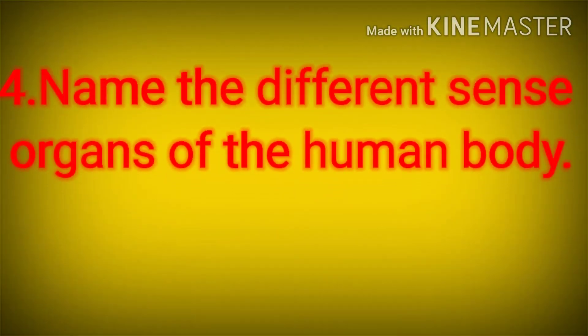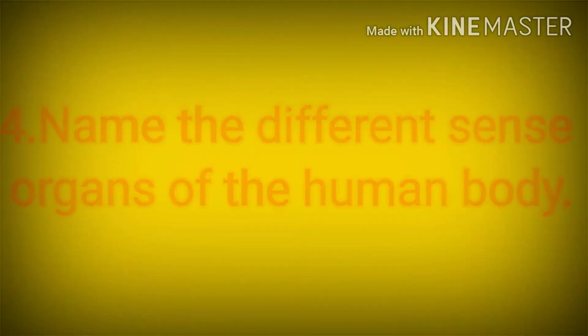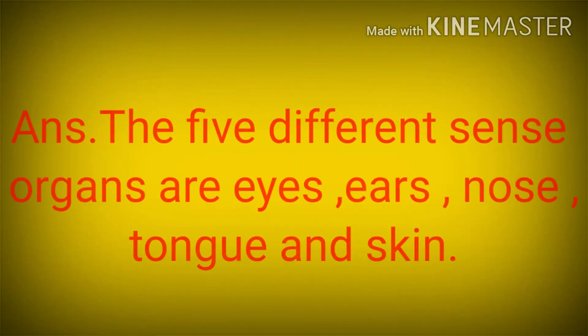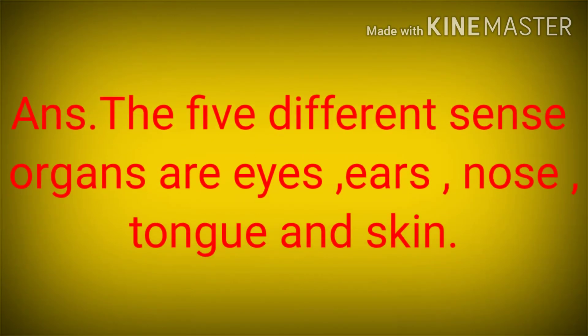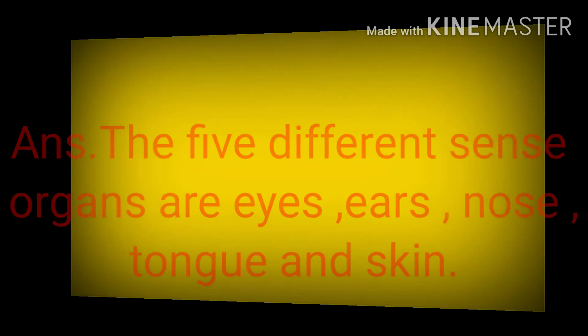Name the different sense organs of the human body. The five different sense organs are eyes, ears, nose, tongue and skin.